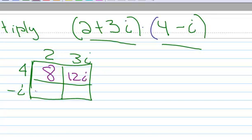2 times negative 1 is negative 2, so I have a negative 2i. Negative 1 times 3, well that's going to be negative 3. i times i is i squared. There's my little square right there.